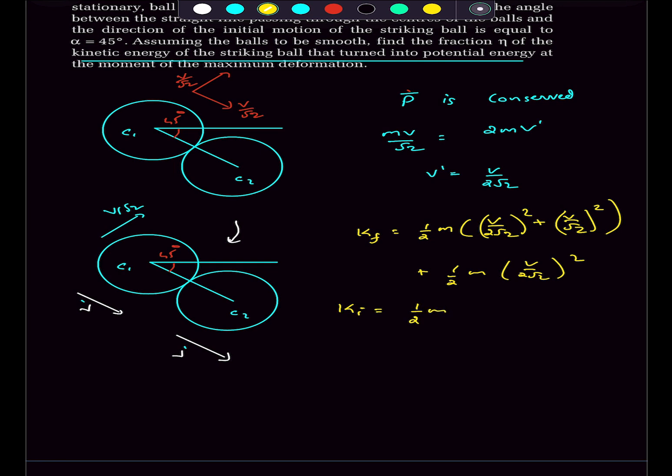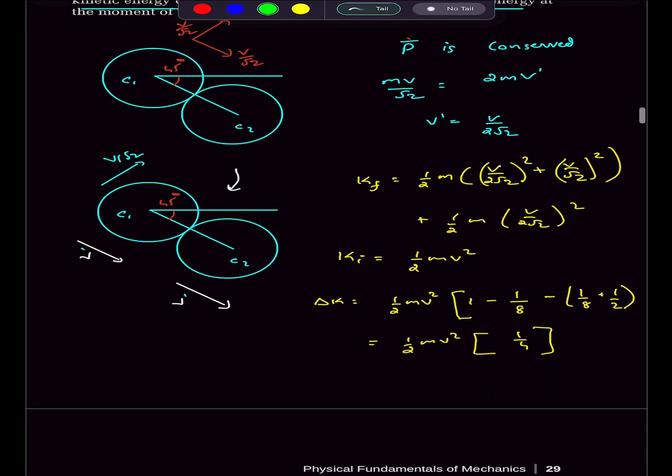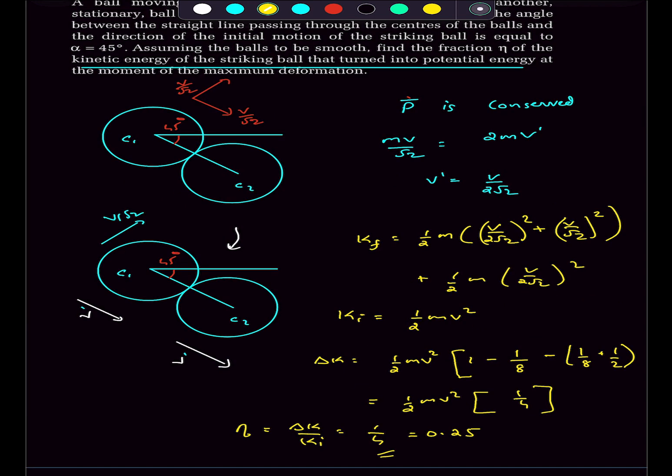Initial kinetic energy is simply half M V squared. So if you find out the change in kinetic energy in this situation, it comes out to be 1 by 4 times the initial kinetic energy, which means the fraction eta of the kinetic energy that was lost is delta K divided by KI, which is going to be 1 by 4, or 0.25 or 25% of the initial kinetic energy was converted into potential energy.